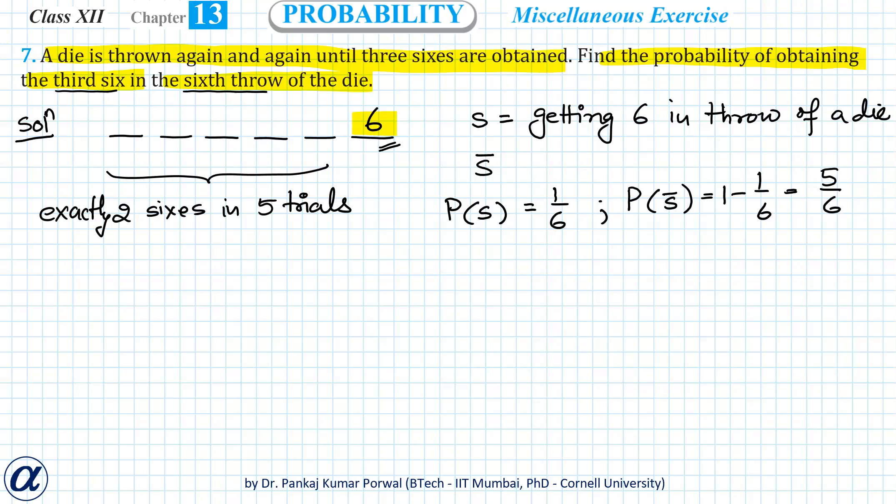Now we want to get exactly two sixes in five trials, so probability of exactly two sixes in five trials will be: n in this case will be five, that is total number of trials; r will be two because we want exactly two sixes.